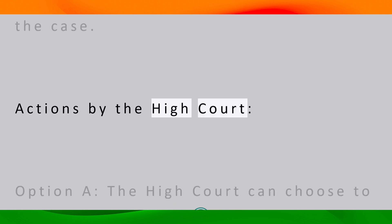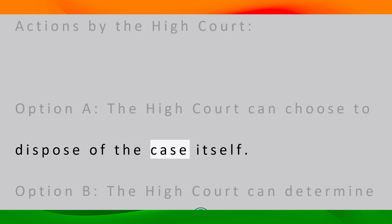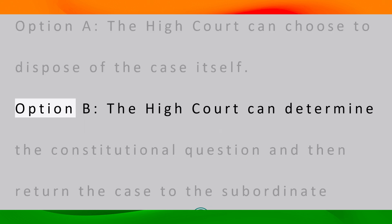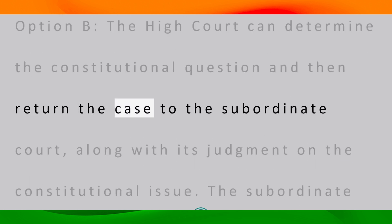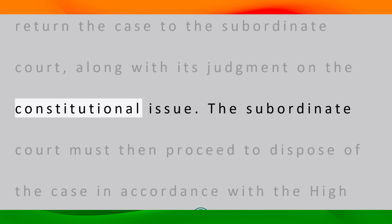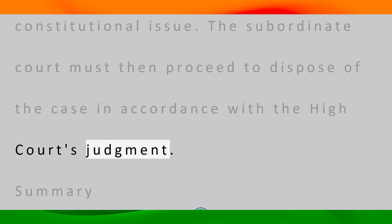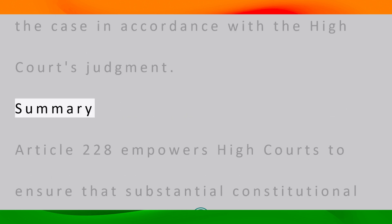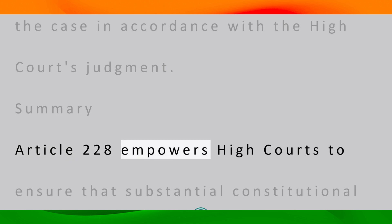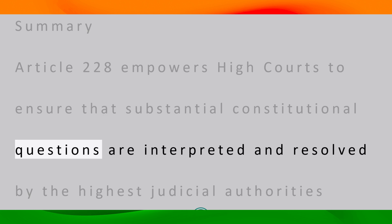Actions by the High Court — Option A: the High Court can choose to dispose of the case itself. Option B: the High Court can determine the constitutional question and then return the case to the subordinate court along with its judgment on the constitutional issue. The subordinate court must then proceed to dispose of the case in accordance with the High Court's judgment.